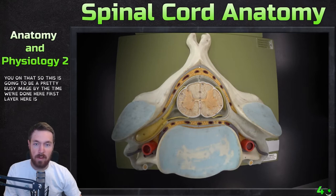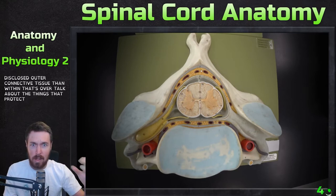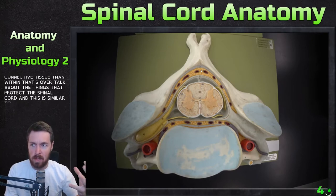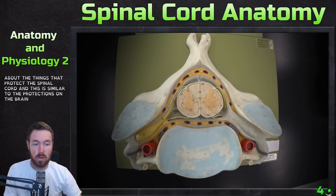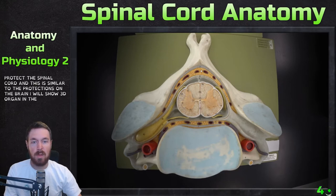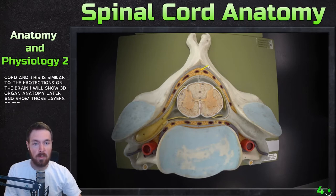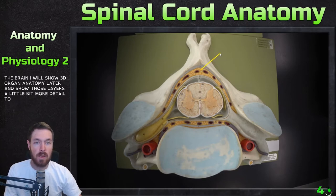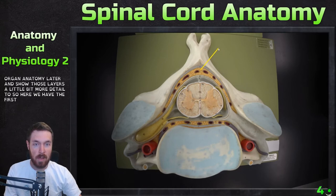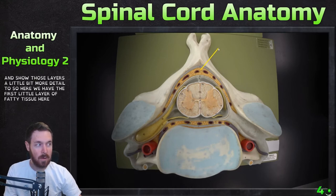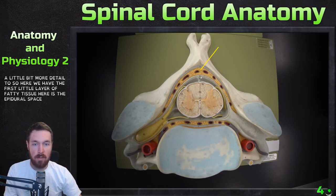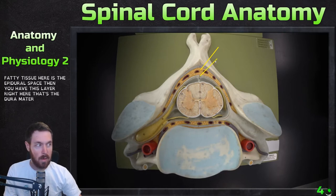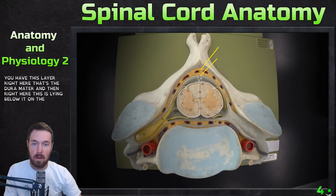The first layer here is the outer connective tissue. So we're talking about the things that protect the spinal cord, and this is similar to the protections on the brain. Here we have the first little layer of fatty tissue — this is the epidural space. Then you have this layer right here, that's the dura mater. And then right here, this line below it on this model is the subdural space.